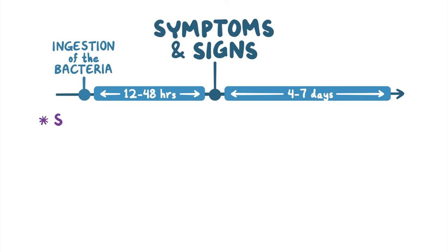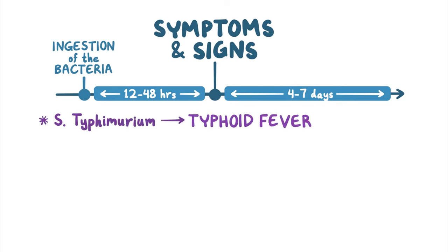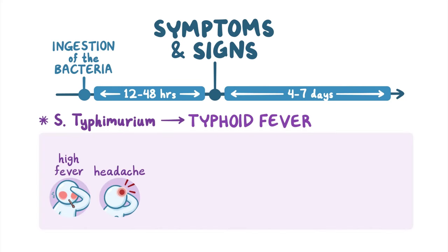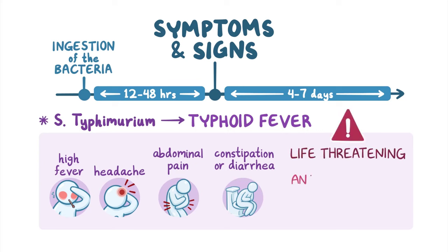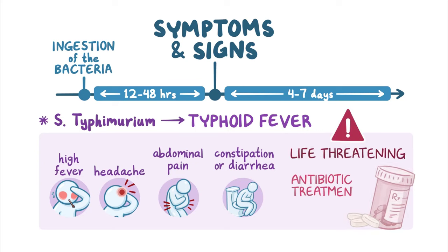The Salmonella typhimurium serotype can cause typhoid fever, which is characterized by similar symptoms including high fever, headache, abdominal pain, and either constipation or diarrhea. Unlike most other salmonella infections, typhoid fever can be life-threatening and often requires antibiotic treatment.